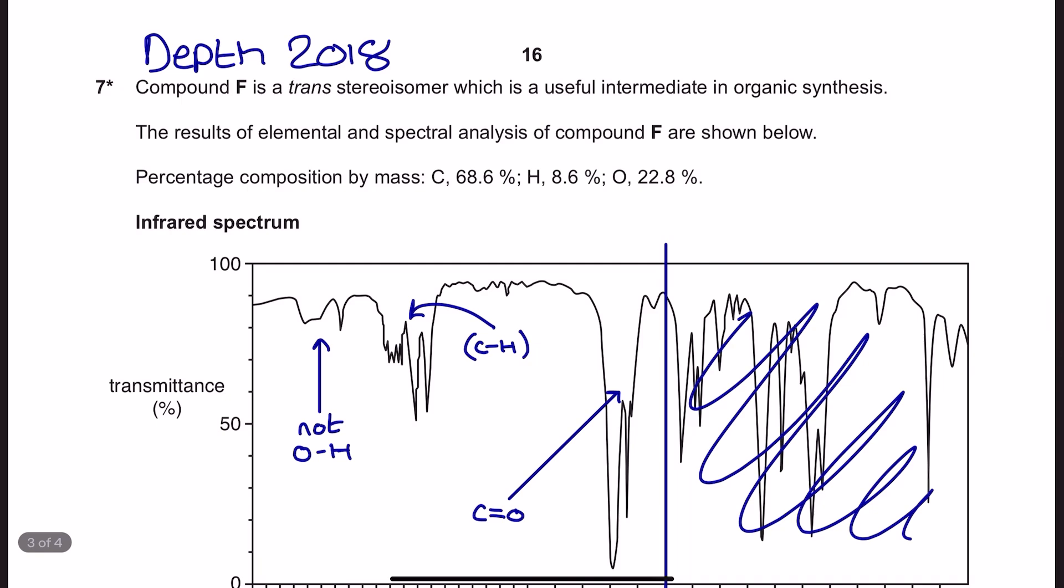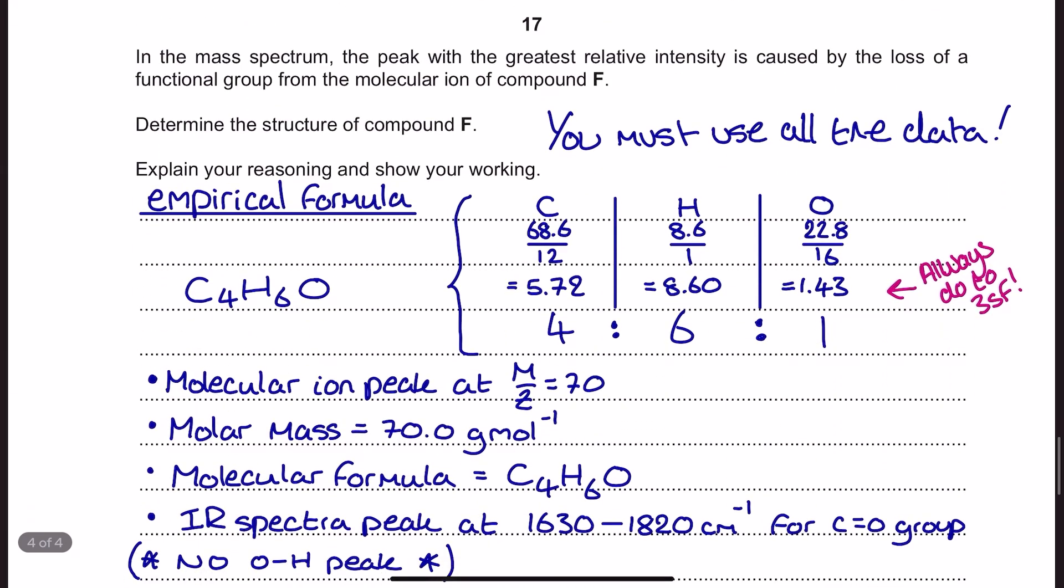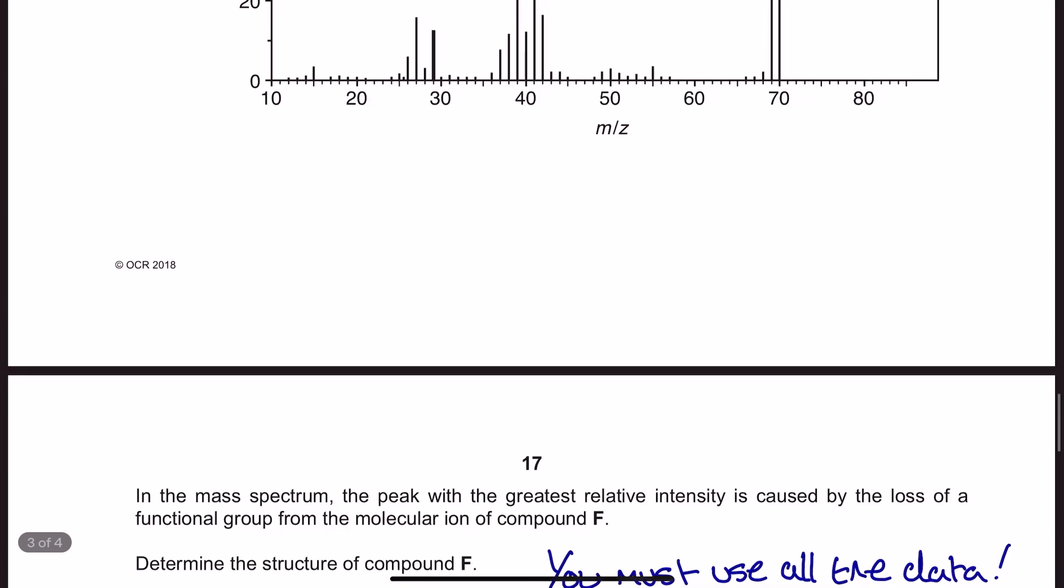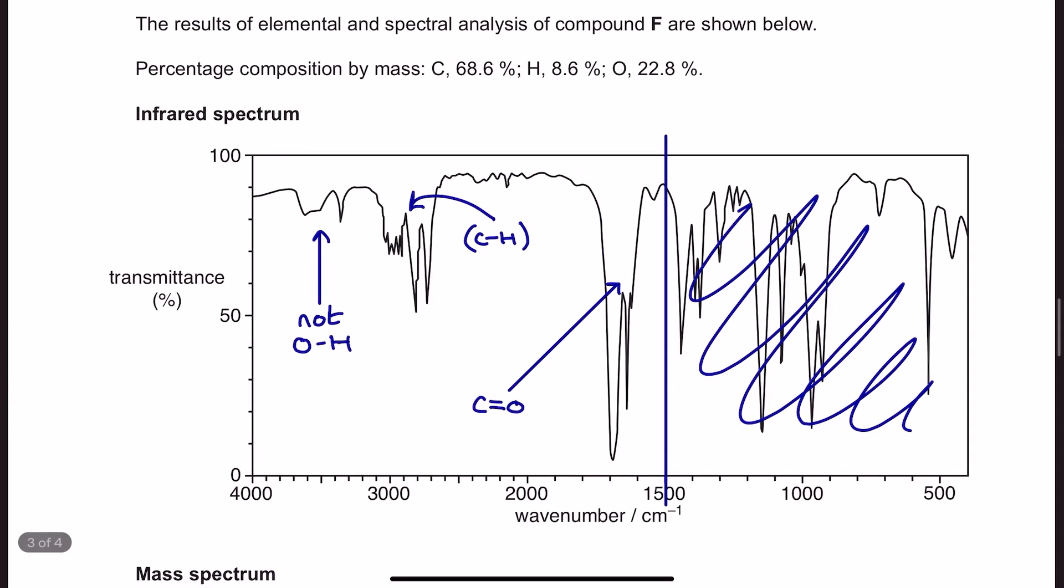Okay so here is my model answer for this. Effectively compound F is a trans isomer which is a useful intermediate, and we've got loads of information about compound F. Now if we have a look at our instructions for the question, in the mass spectrum the peak with the greatest relative intensity, that means the tallest peak, is caused by the loss of a functional group from the molecular ion of compound F. We need to determine what compound F is and we need to use all the data. And just like with the A level exam paper questions, you must use all the data. But you are allowed to annotate your spectrum. So that's what I'm going to do first.